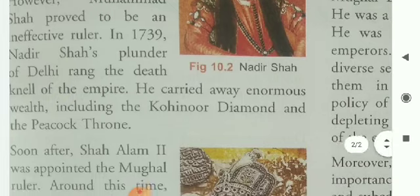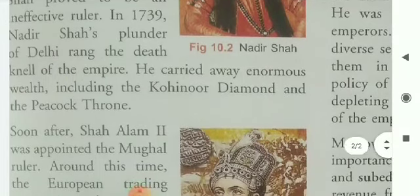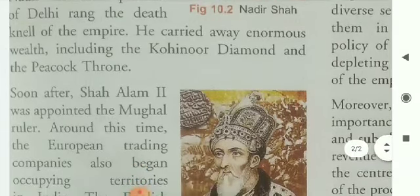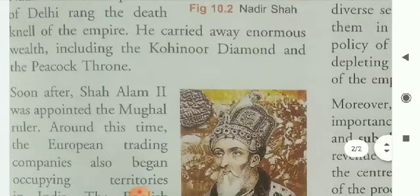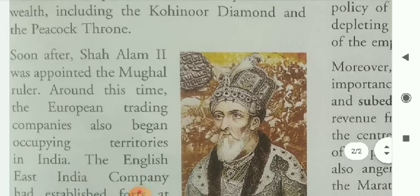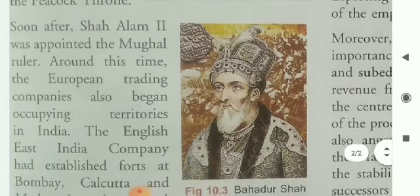In 1739, Nadir Shah's plunder of Delhi rang the death knell of the empire. He carried away enormous wealth, including the Koh-i-Noor diamond and the Peacock Throne.